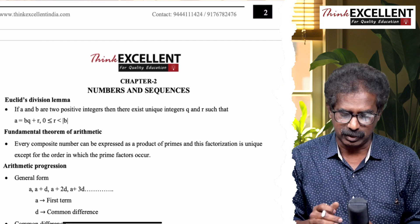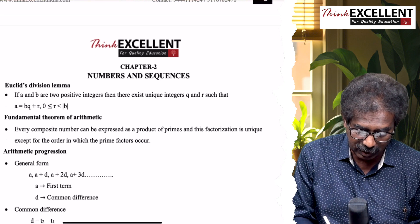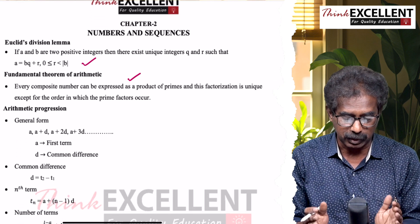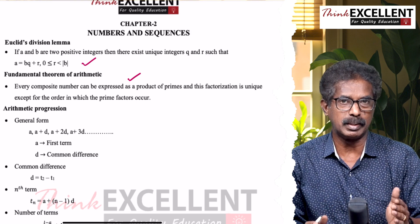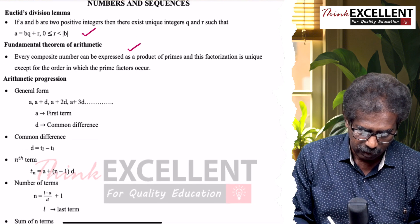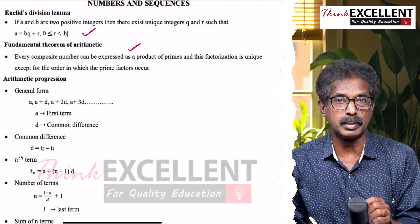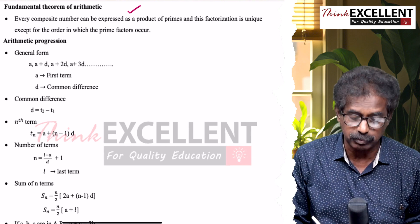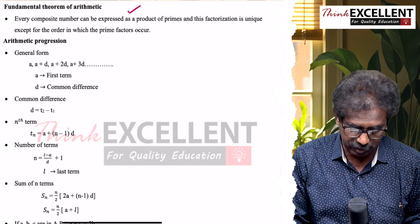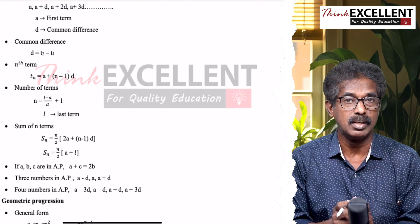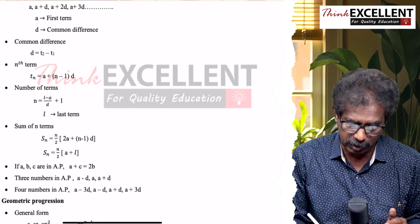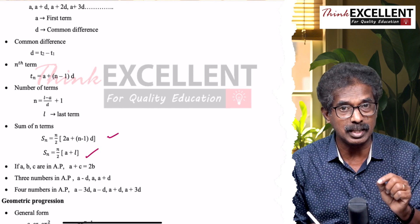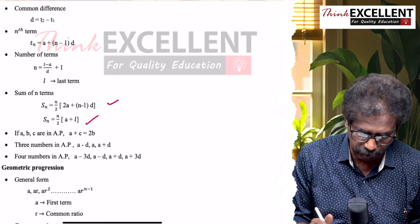Chapter number two: Numbers and sequences. First, Euclid division lemma - just go through that. Fundamental theorem of arithmetic is very important. Arithmetic progression - go through the sums. Then arithmetic progression, that is the general form. How do you find d? T2 minus T1. Then nth term, number of terms: (L − A)/D + 1, where L is the last term.